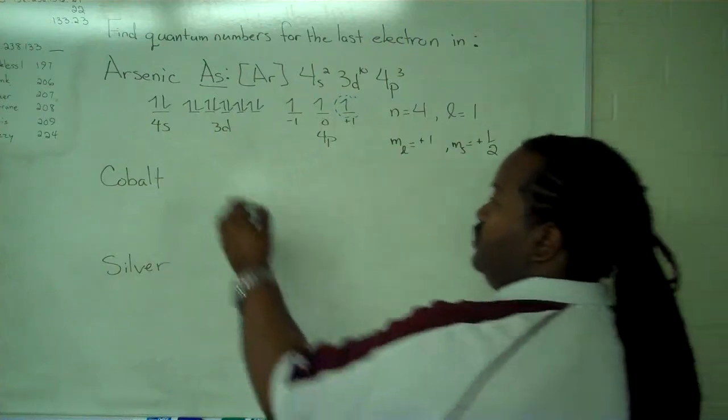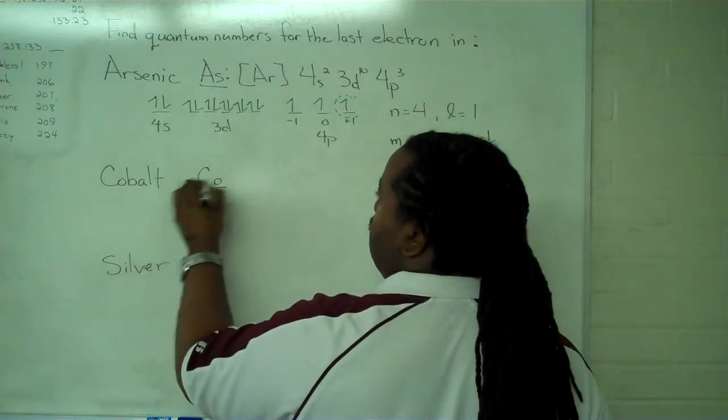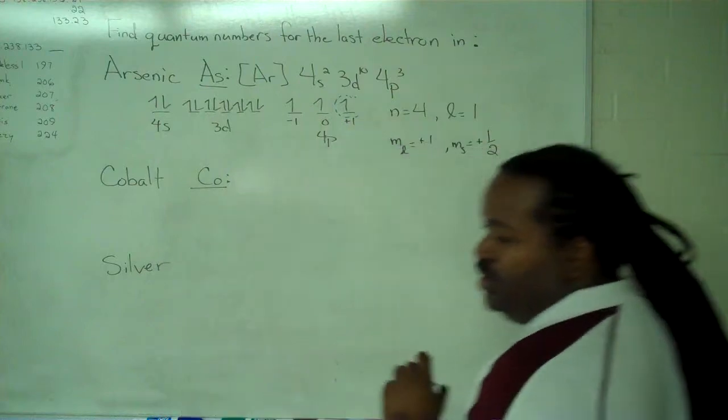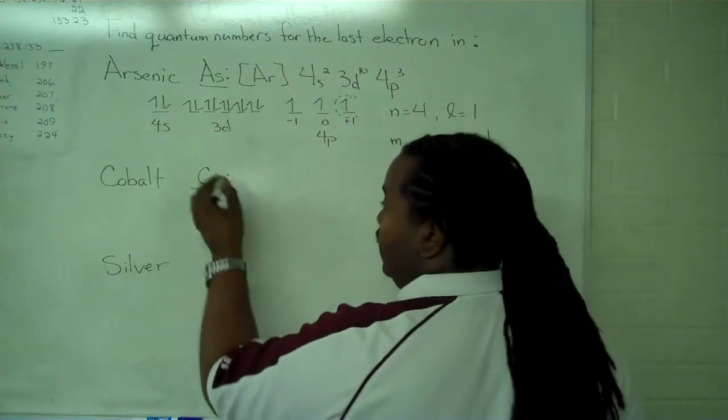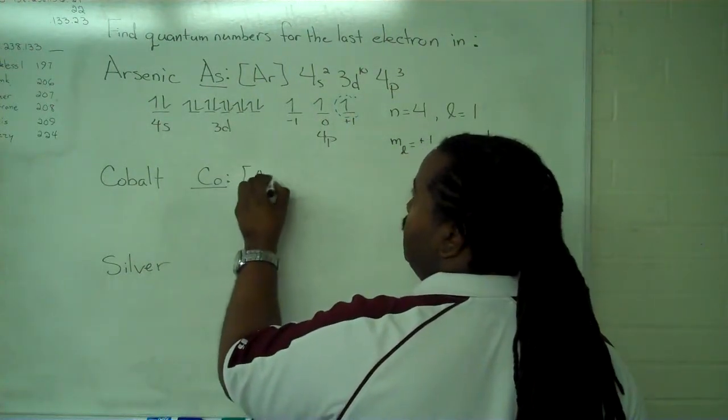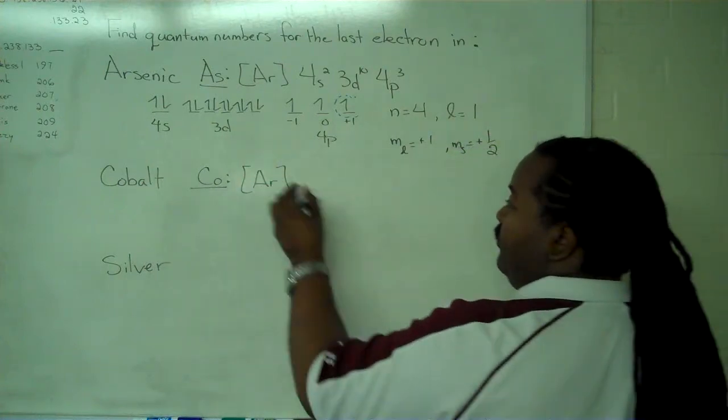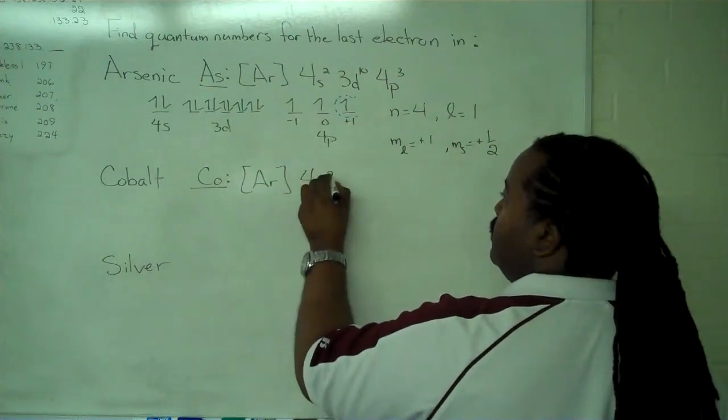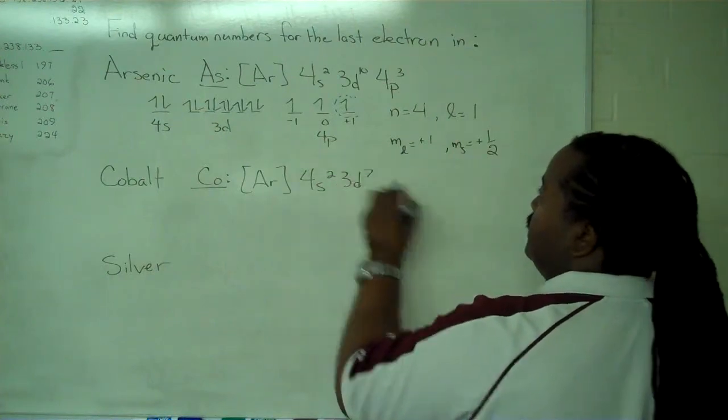Next is cobalt. And we look, and we find that the configuration gives us argon. And then we have 4s2, 3d7.